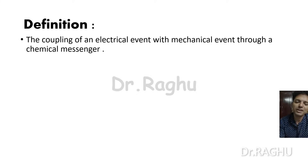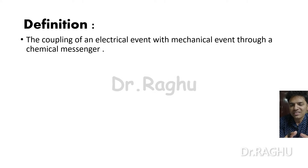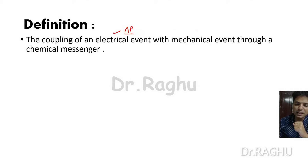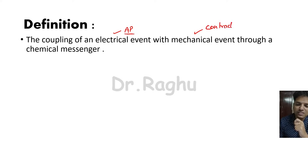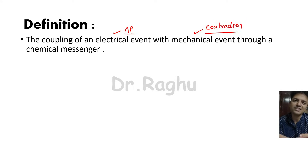Excitation-contraction coupling is the coupling of an electrical event with a mechanical event through a chemical messenger. The electrical event here is nothing but the generation of the action potential on the skeletal muscle membrane, and the mechanical event is the contraction of the skeletal muscle. Something is linking this electrical event with the mechanical event via a chemical messenger — this is excitation-contraction coupling.